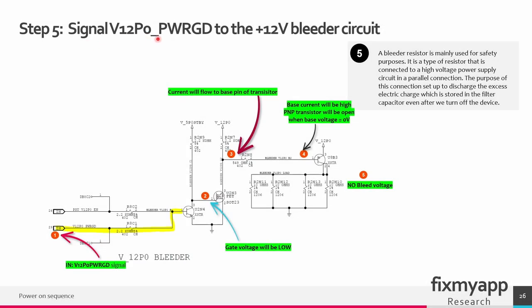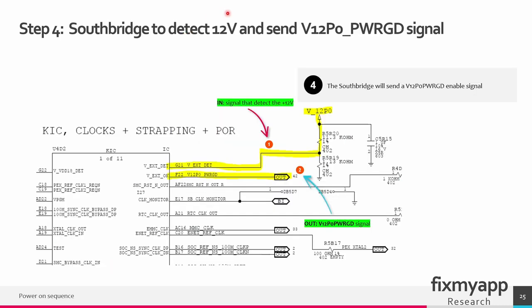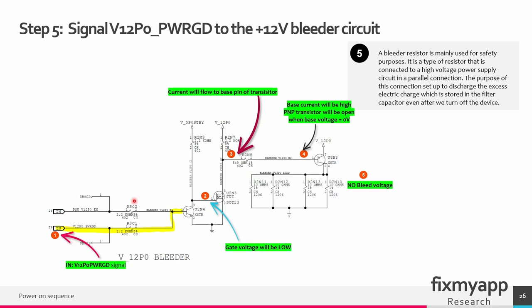The power good signal — 12 volt power on power good — is created, and with 12 volt present it will generate a power good signal. This signal goes to a bleeder circuit. A bleeder circuit is an electrical circuit used to discharge energy from a capacitor after it has been disconnected from its power source. In Xbox, capacitors are used for filtering, energy storage, and power supply smoothing. A bleeder circuit provides a discharge path for stored energy through a combination of resistors. When the Xbox is in standby mode, this transistor is turned on and all capacitors connected to the 12 volt main power line are discharged through the resistor network.